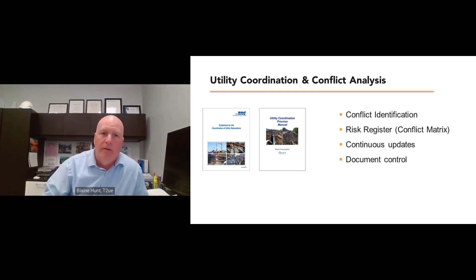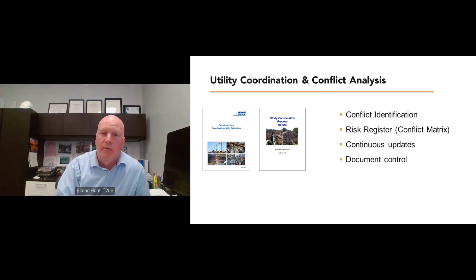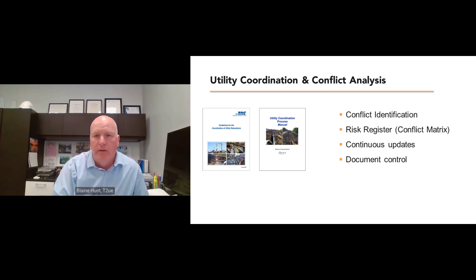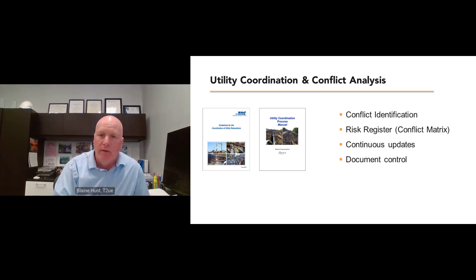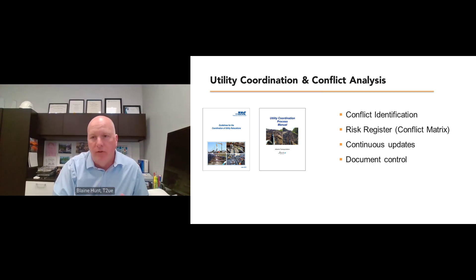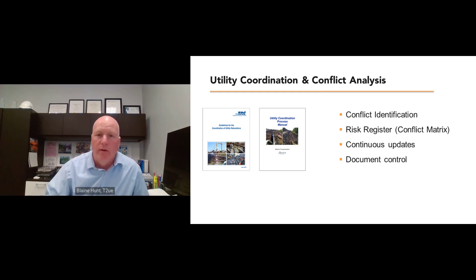Utility coordination and conflict analysis: there are many guidelines written on this topic. They share a common belief that projects need to properly manage utilities at the early stage. It's the responsibility of both right-of-way owners and agencies to develop an efficient, consistent utility coordination process. Most use the TAC (Transportation Association of Canada) guideline as their starting point, leading to guidelines by various municipalities. In Alberta, the Utility Coordination Process Manual was published in 2020. It requires a good understanding of utility data and quality levels in the SUE report.